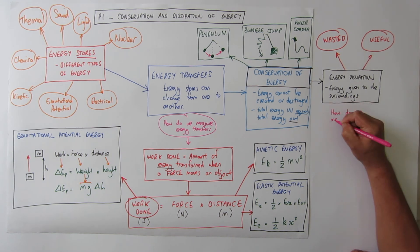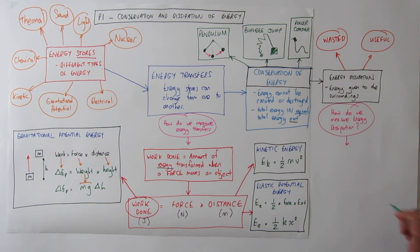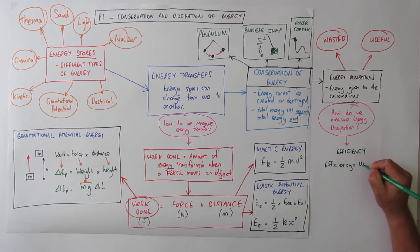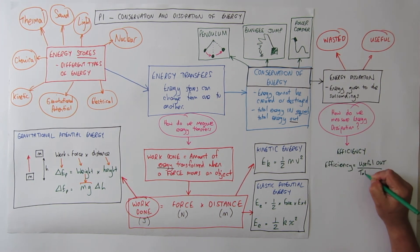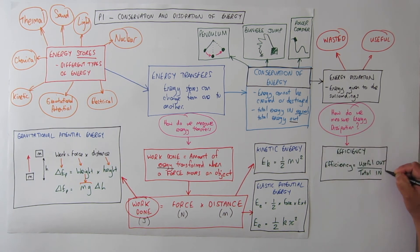Now don't forget physics is all about measuring stuff. So how do we measure energy dissipation. Now this is measured by something called efficiency. And we have an equation which is efficiency is useful out over total energy in.